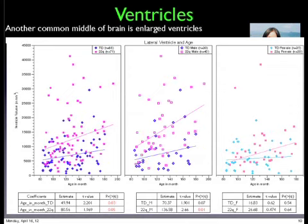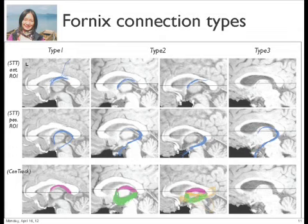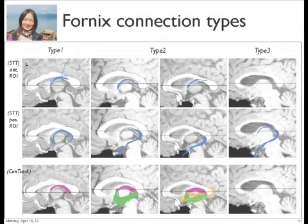A complicated but striking slide: this is a slice through the middle of the brain showing the corpus callosum — the big white matter bridge connecting the two sides of the brain. We've been interested in a connective tract called the fornix, connecting the hippocampus to the rest of the brain. Some kids have a very clean tract, others have more stuff tangled up with it. What's the functional implication? We're trying to pull these things together to understand how multiple factors relate to outcomes.